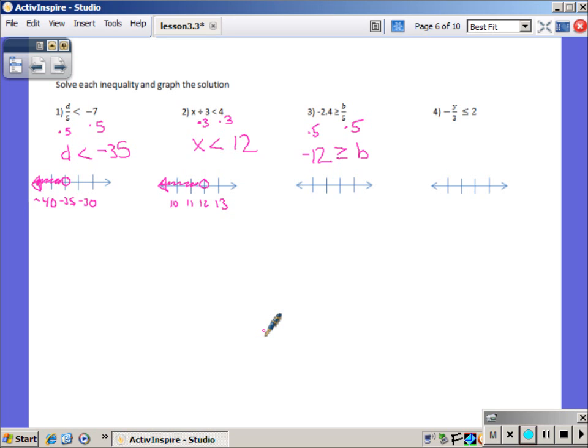Watch our variables on the right. Read it. b is less than or equal to... So when we go to graph then, solid dot, because of the or equal to, b is less than or equal to, our shading is going to come to that left-hand side.